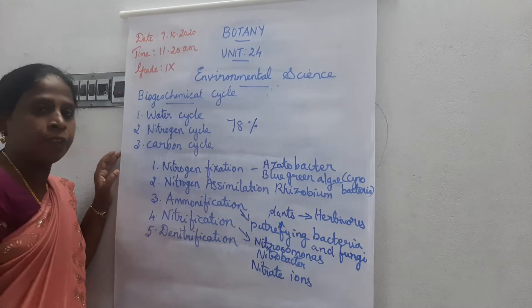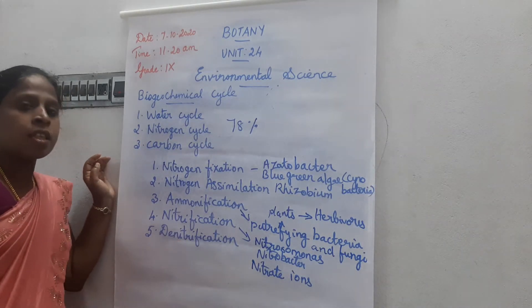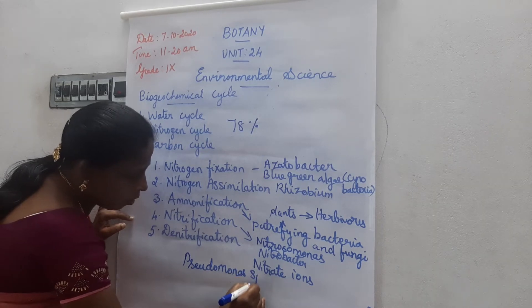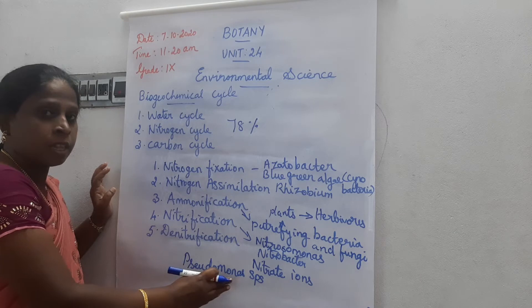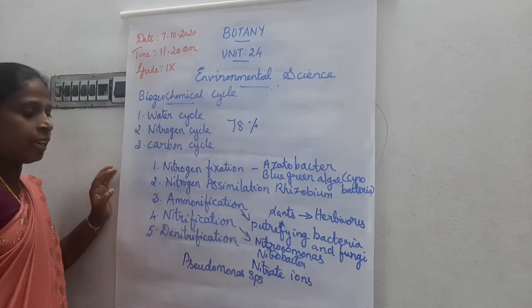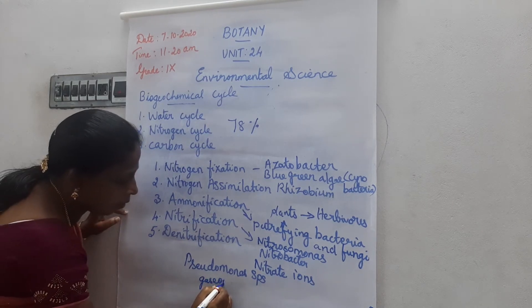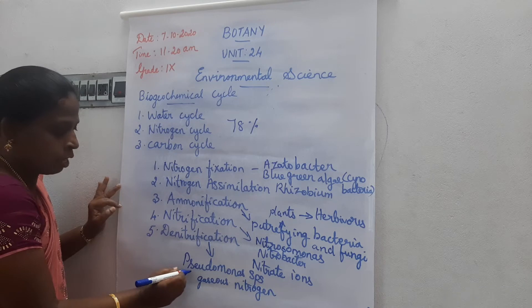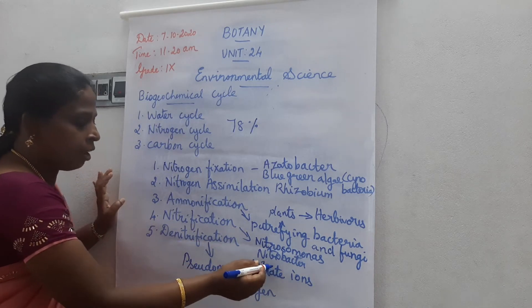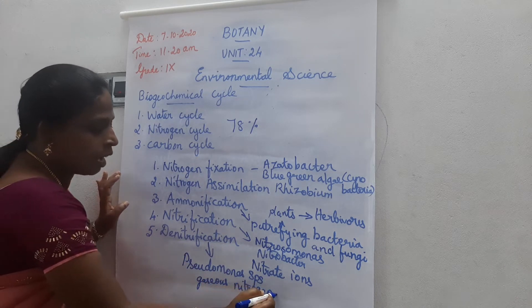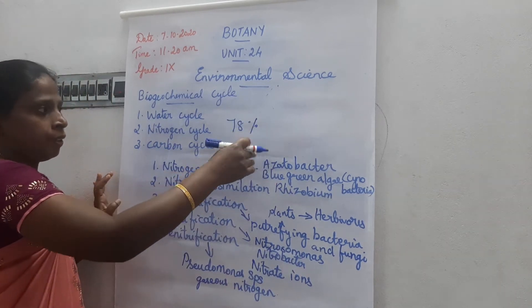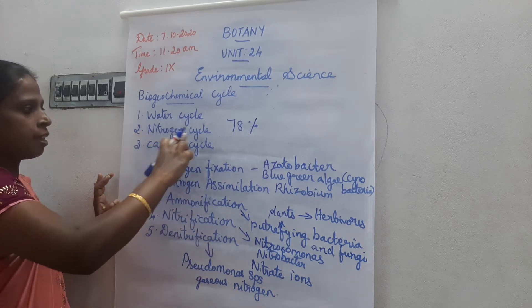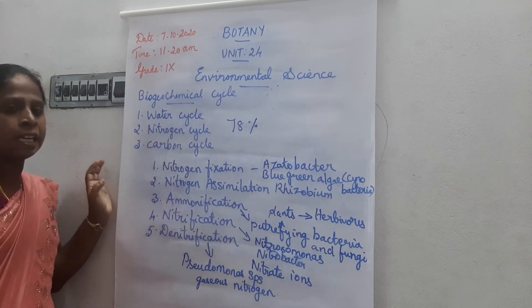The next process is denitrification. The soil bacteria, such as pseudomonas species, reduce the nitrate ions into gaseous nitrogen. This gaseous nitrogen is sent back to the atmosphere, and the cycle is formed — that is called the nitrogen cycle.